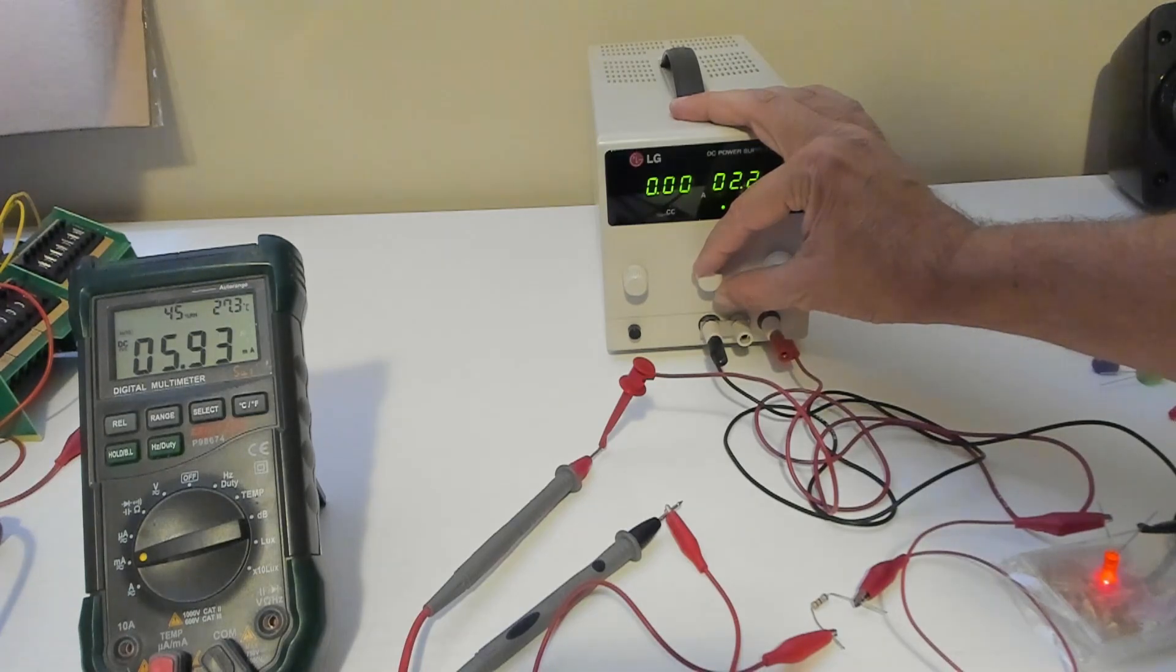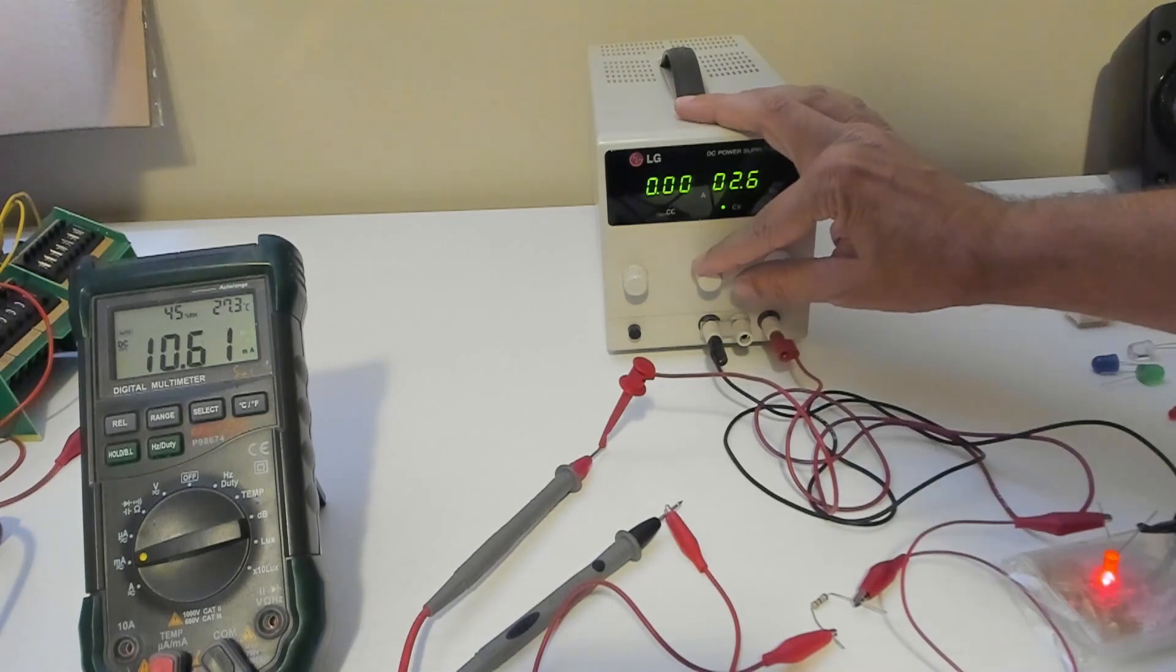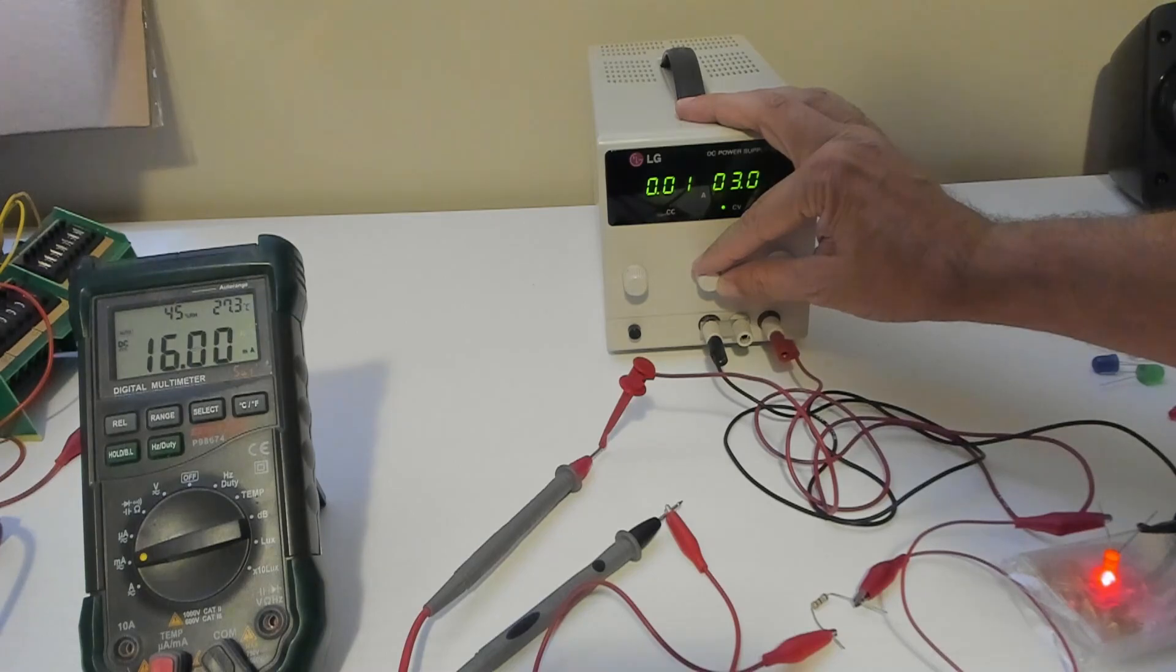2.1 volts, we're at 5. 2.2, we're at 6. 2.6, we're at 12. 2.9, we're at 14. 3 volts. The flipper is 3.3.